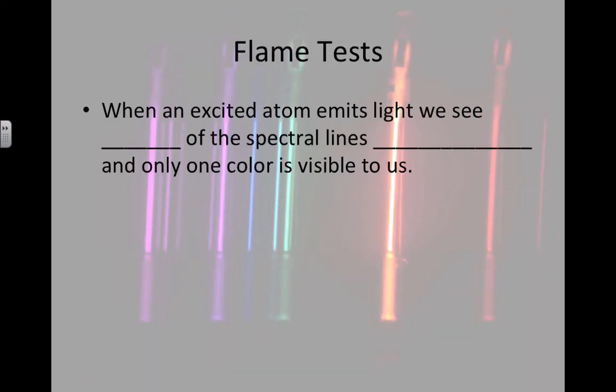The flame test is used particularly to identify metals. When an excited atom emits light, we see all of the spectral lines all put together. They're all combined and only one color is visible to us. So in my class, we'll use a prism or a diffraction grating so that we can separate out all of the colors that are sort of blending together and see bands of specific colors.